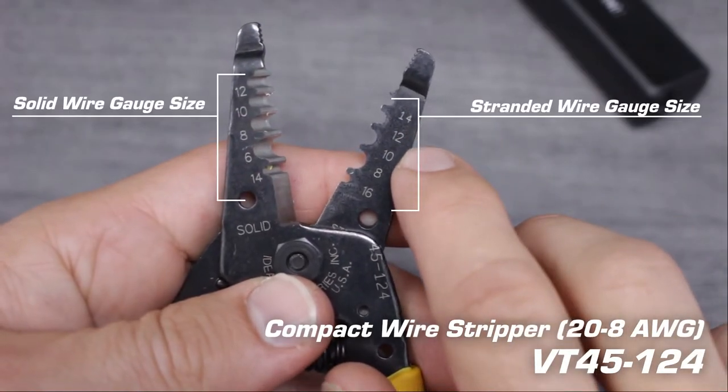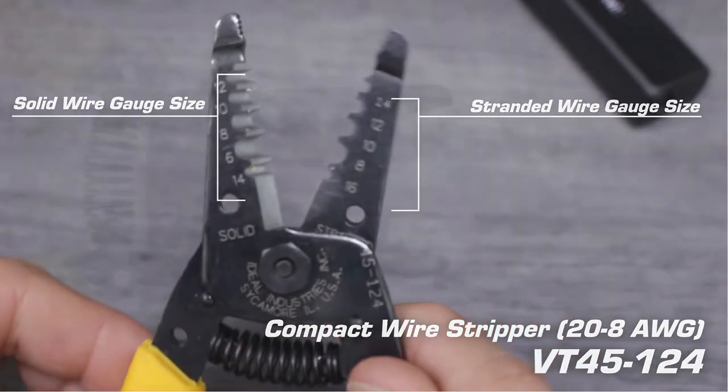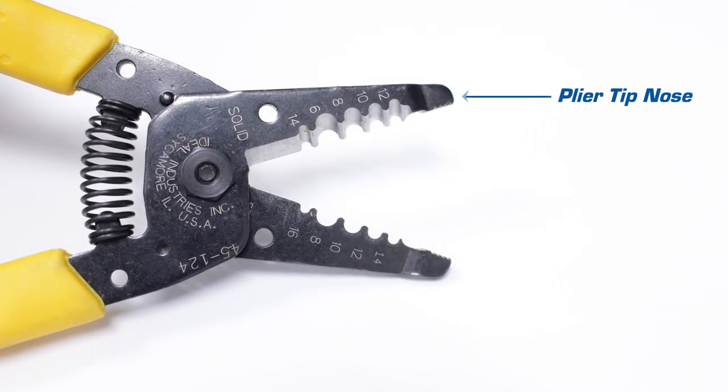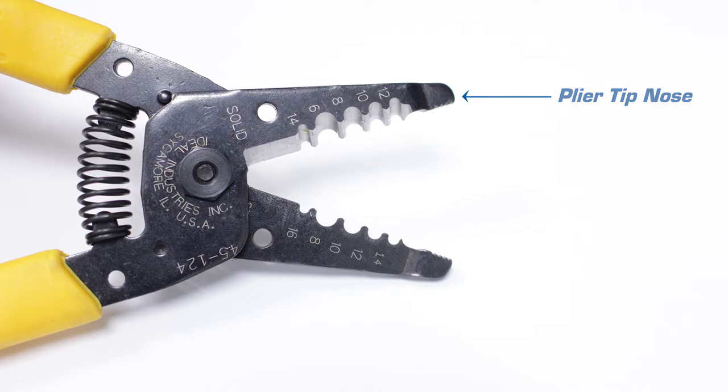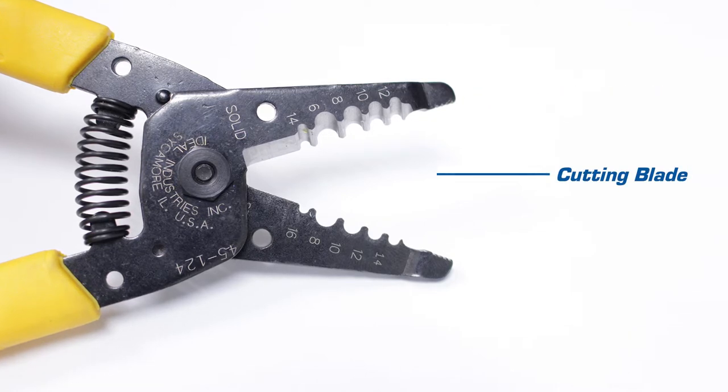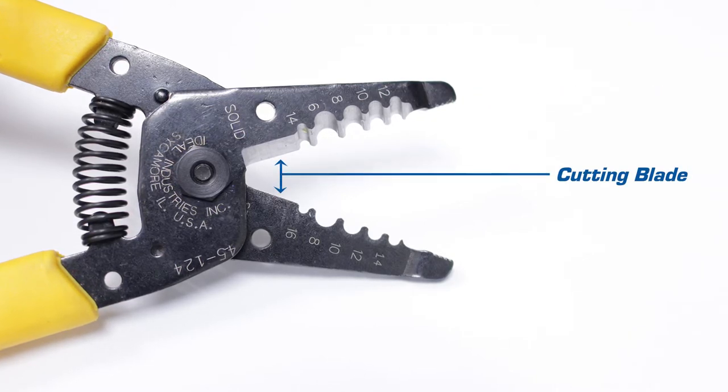This tool offers multiple cut nests to handle a wide range of wire sizes. It also has a tapered plier nose that can be used to grip, twist, bend, or pull. Lastly, this tool offers a sharp cutting blade ideal for cutting solid and stranded wires as large as 10 gauge.